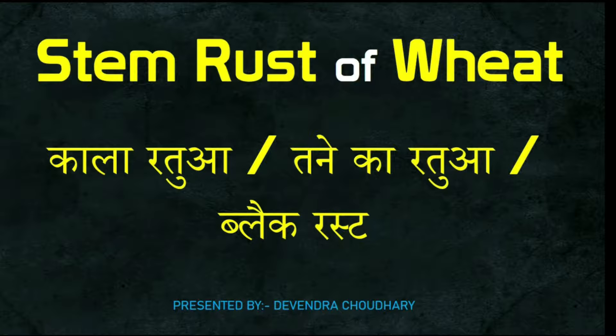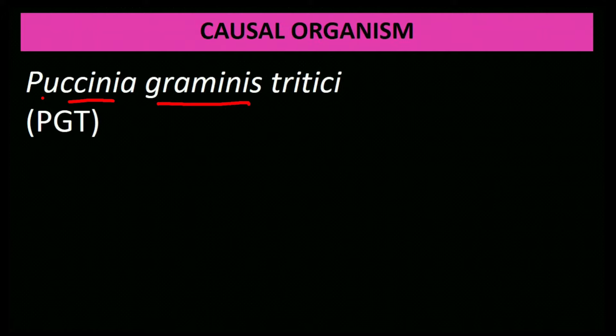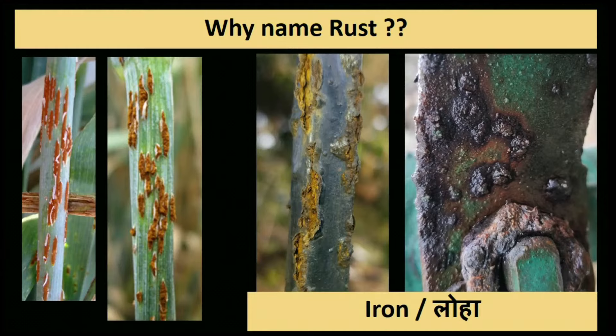Stem rust or black rust of wheat is caused by Puccinia graminis tritici (PGT). Why is it called 'rust'? The Hindi name for rust is 'jang lagna' — like iron rusting.